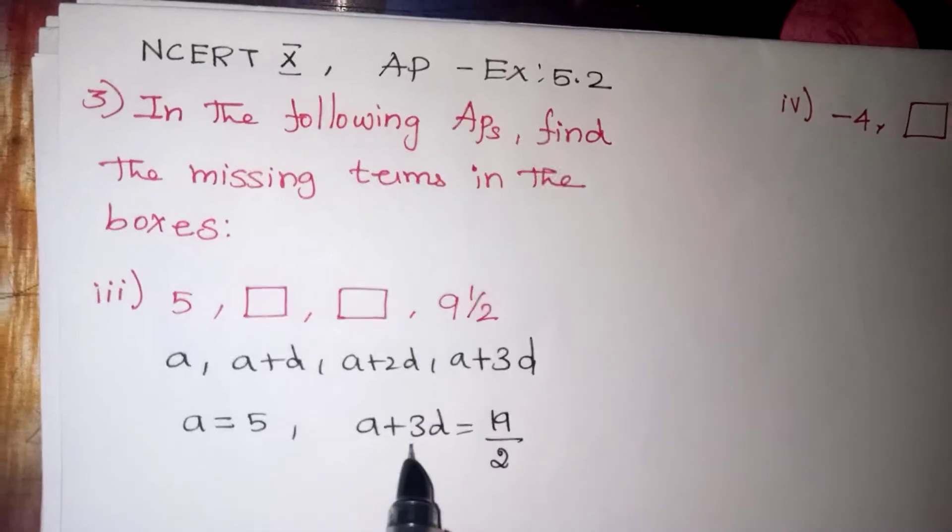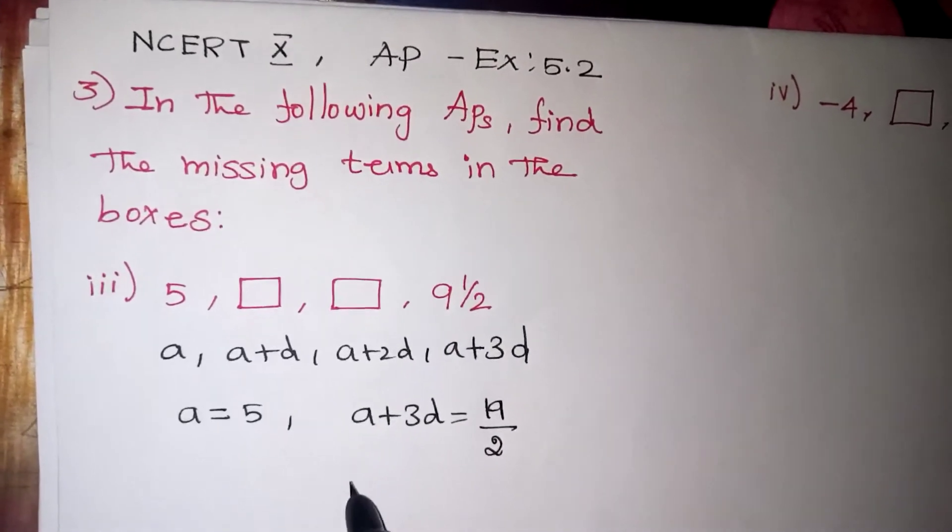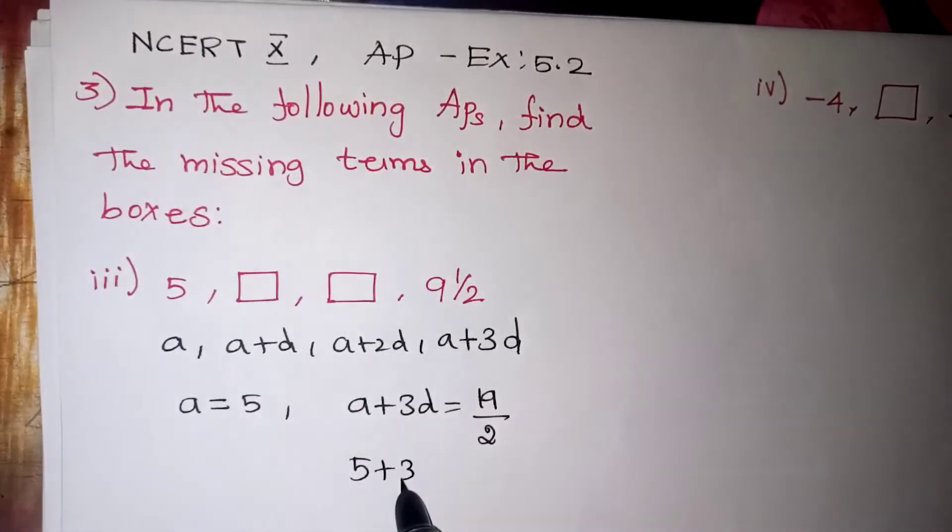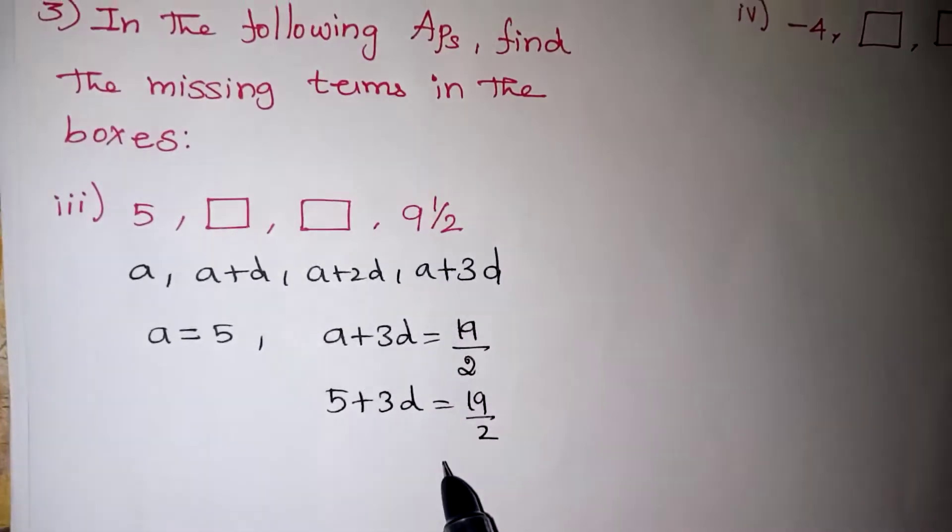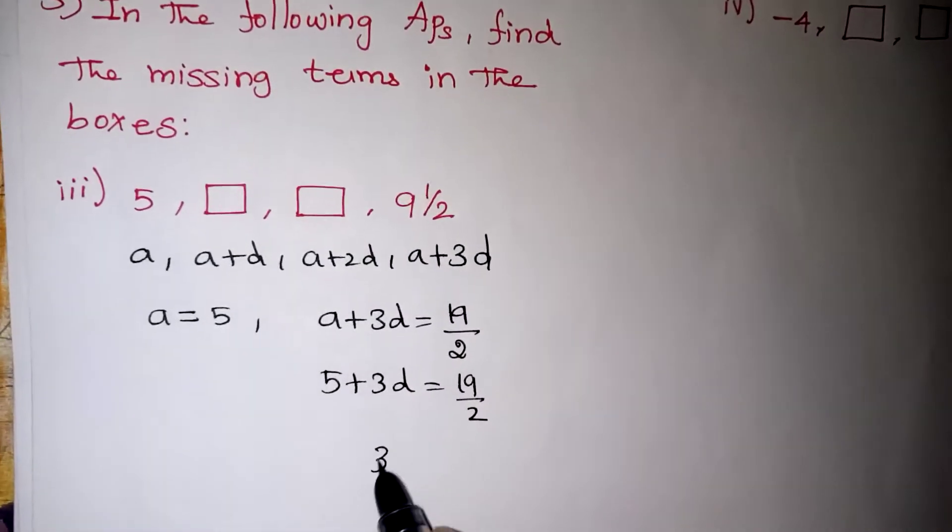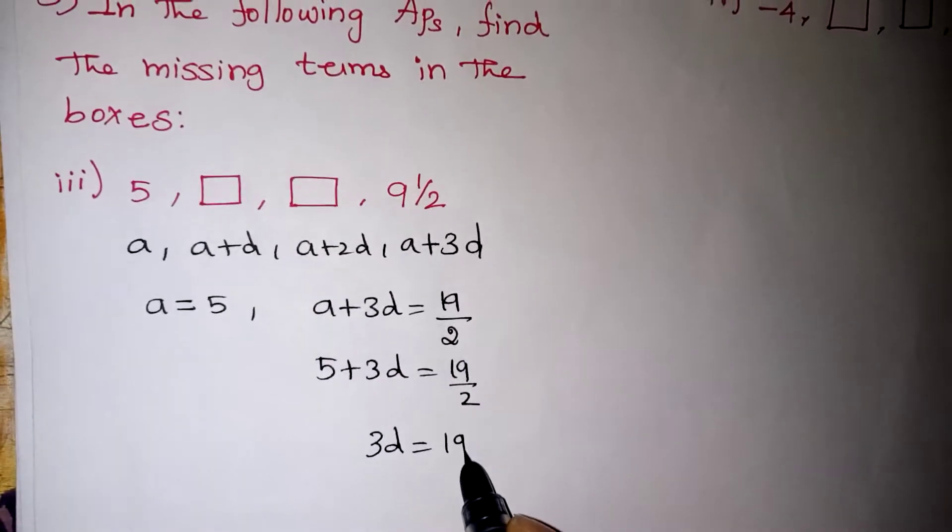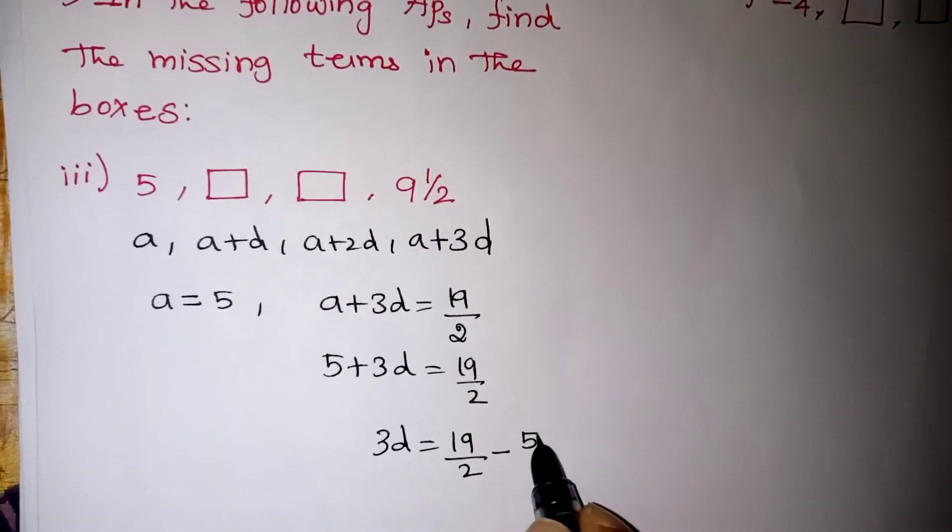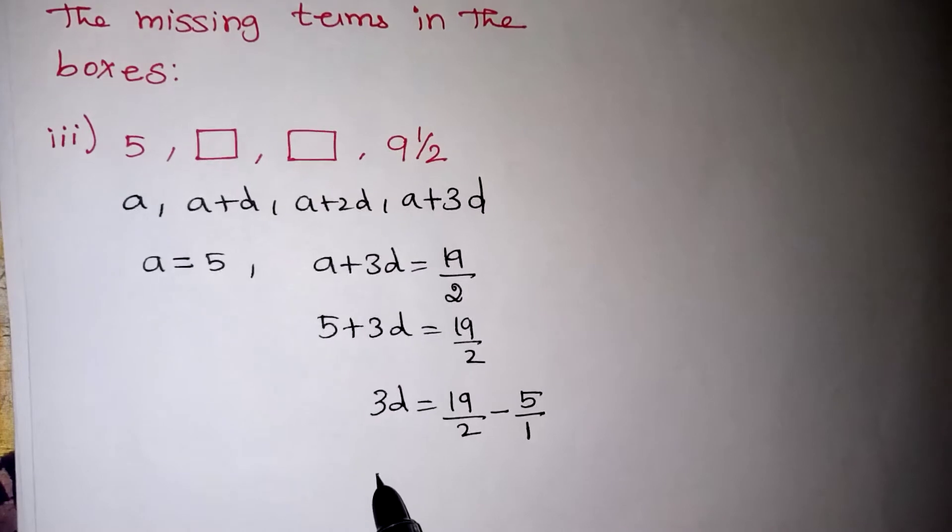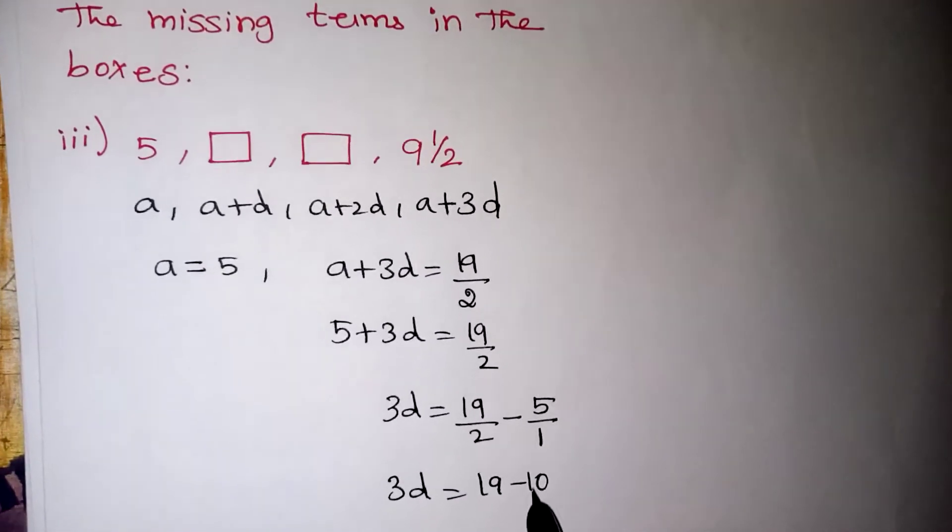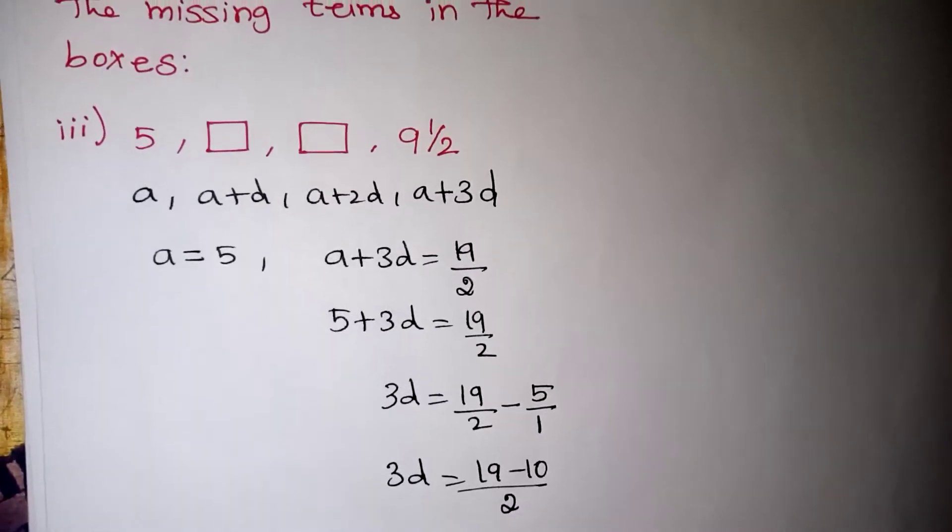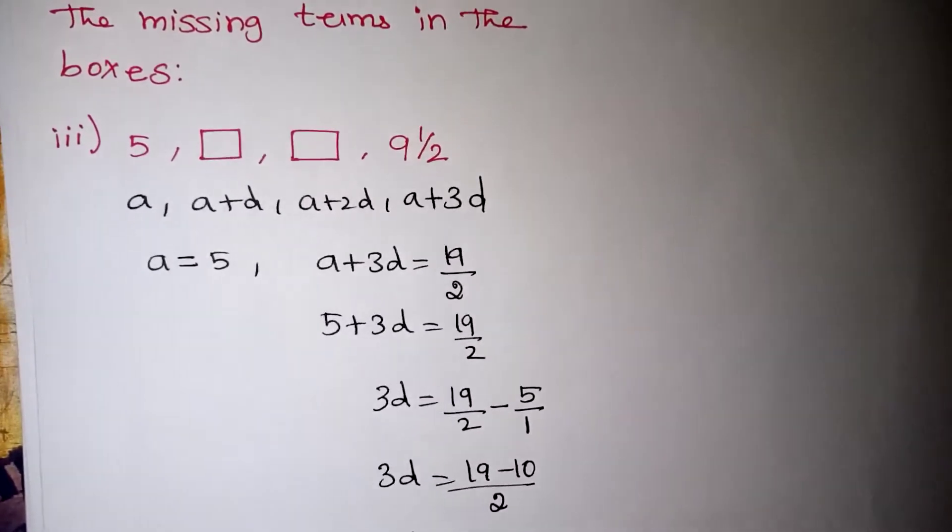Now A value is given. So substitute in the second equation. In the place of A is 5, so 5 plus 3D is equal to 19 by 2. The plus 5 you can take to the other side, it will become minus now. So 3D is equal to 19 by 2 minus 5 by 1. Take the LCM. So 3D is equal to 19 minus 10 by 2.